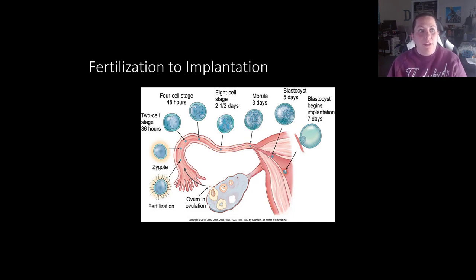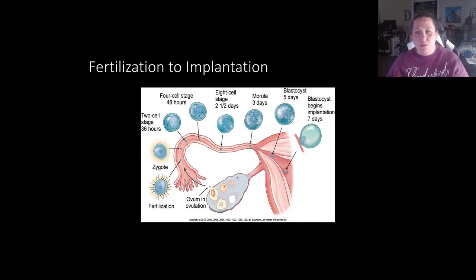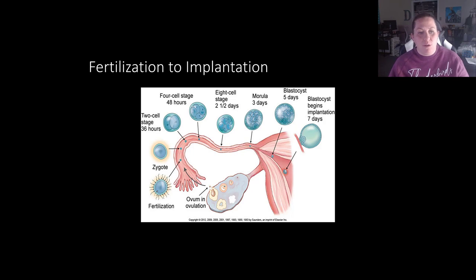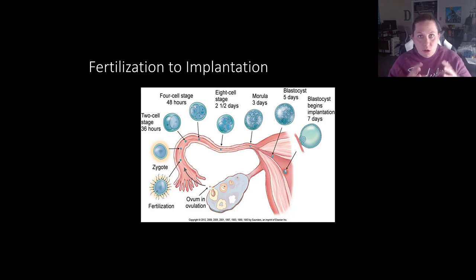The first thing we want to look at is fertilization to implantation — what occurs through this process when the egg is fertilized versus when it implants into the uterus. The ovum releases the egg with ovulation, it then travels into the fallopian tube, and fertilization potentially takes place there. If fertilization occurs, we now have a new cell called a zygote, because we have the combination of egg and sperm DNA, giving us a new individual.